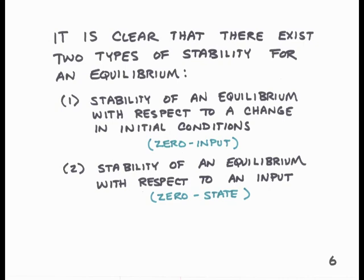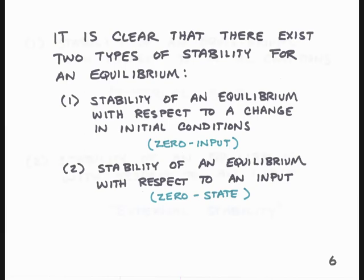There are two types of stability for an equilibrium. One is stability of the equilibrium with respect to a change in initial conditions — you can think of this as the zero-input case. The terminology we use for these two different kinds of stability is internal stability, for stability of an equilibrium with respect to initial conditions, and external stability, for stability of an equilibrium with respect to an input. In future presentations, we'll discuss the mathematical conditions for these two kinds of stability and provide tests which will allow you to determine the stability of a system from the model. We'll also discuss the relationship between these two different kinds of stability, and when one implies the other.